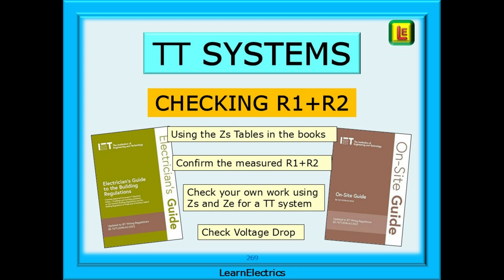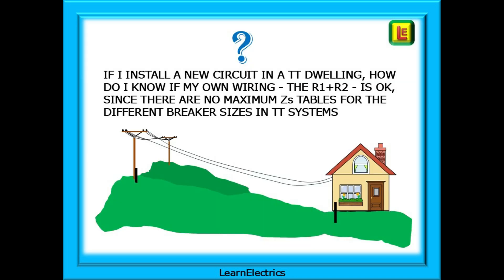We can use the on-site guide or the electrician's guide to the building regulations, since they both contain measured ZE tables, and page numbers given relate to Amendment 2 of both books. This was the sort of question that was asked. If I install a new circuit in a TT dwelling, how do I know if my own wiring, the R1 plus R2, is OK, since there are no maximum ZS tables for the different breaker sizes in TT systems?